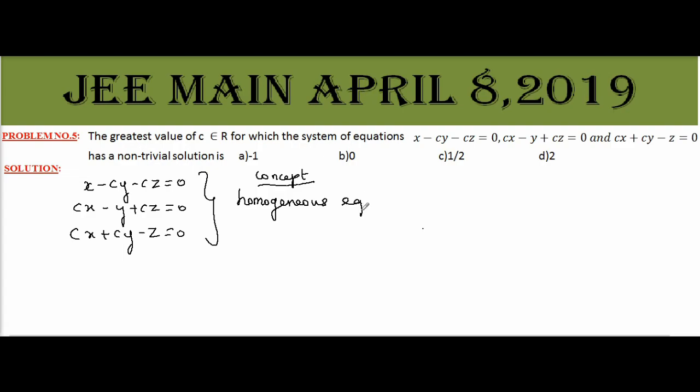Homogeneous equations with non-trivial solutions. For homogeneous equations to have a non-trivial solution, the condition is determinant of the coefficient matrix is 0.